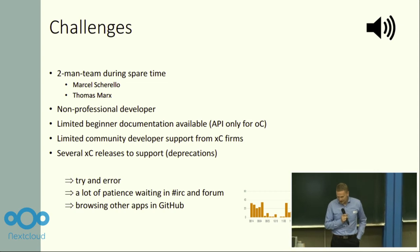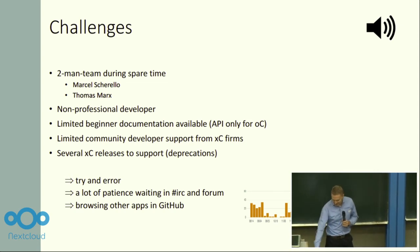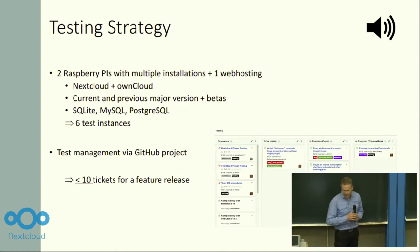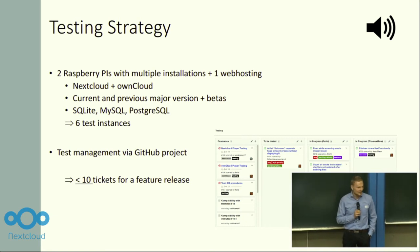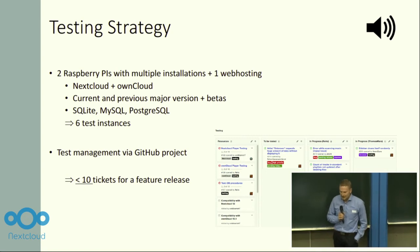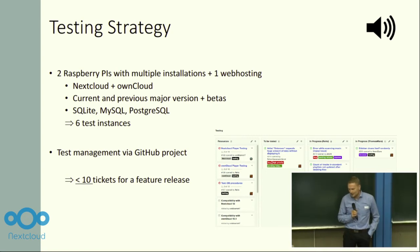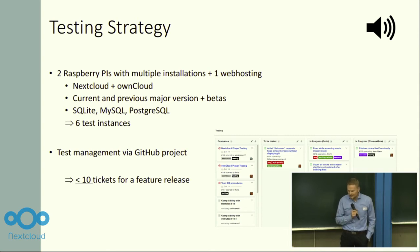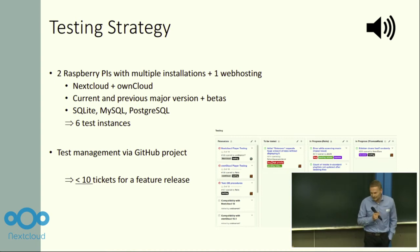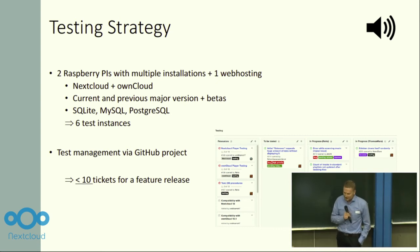Over the year, we ended up with around 1,000 commits — mostly by just the two of us — to get the app up and running. The only way to deliver the app at that scale was to focus on a very detailed testing strategy. We currently have two Raspberry Pis and one web hosting package to run different instances of NextCloud and OwnCloud — current version, previous version, plus some betas — and then all the database combinations. So whatever we fix or release in a new version, we test it across six test instances to cover all possibilities as well as possible.